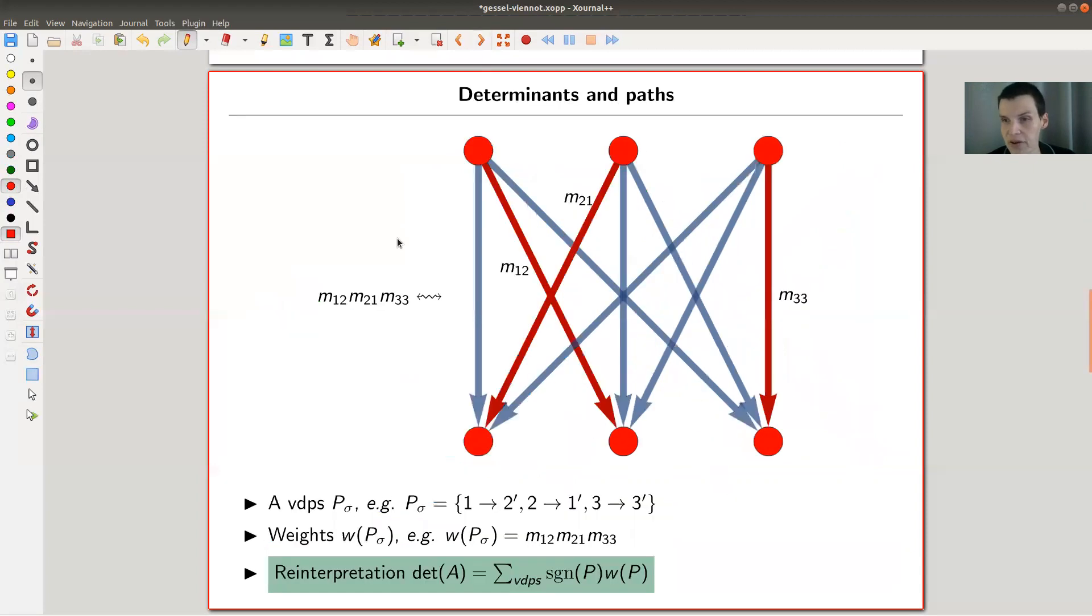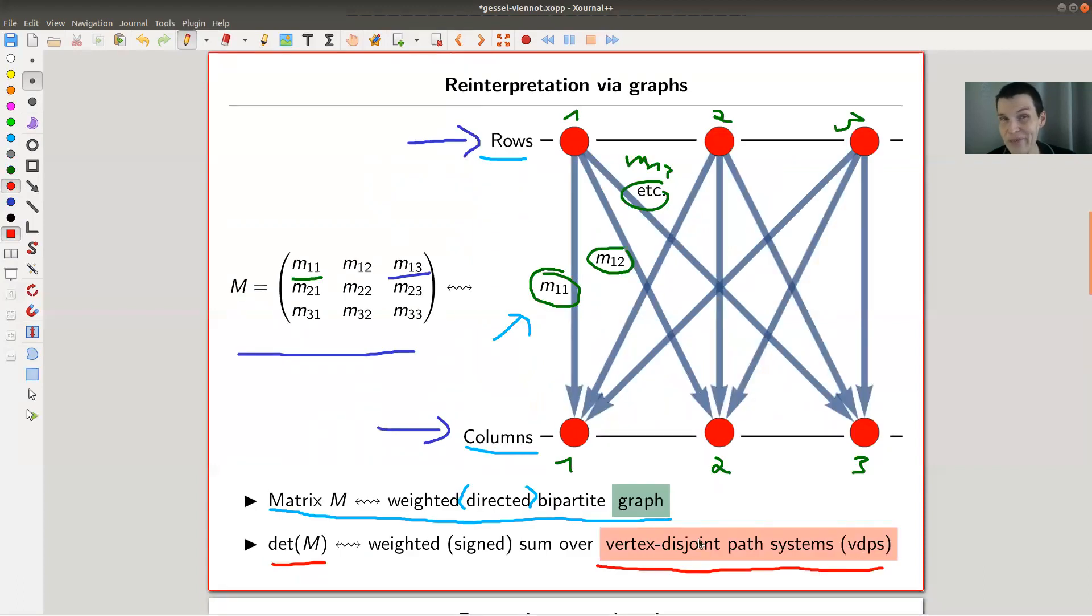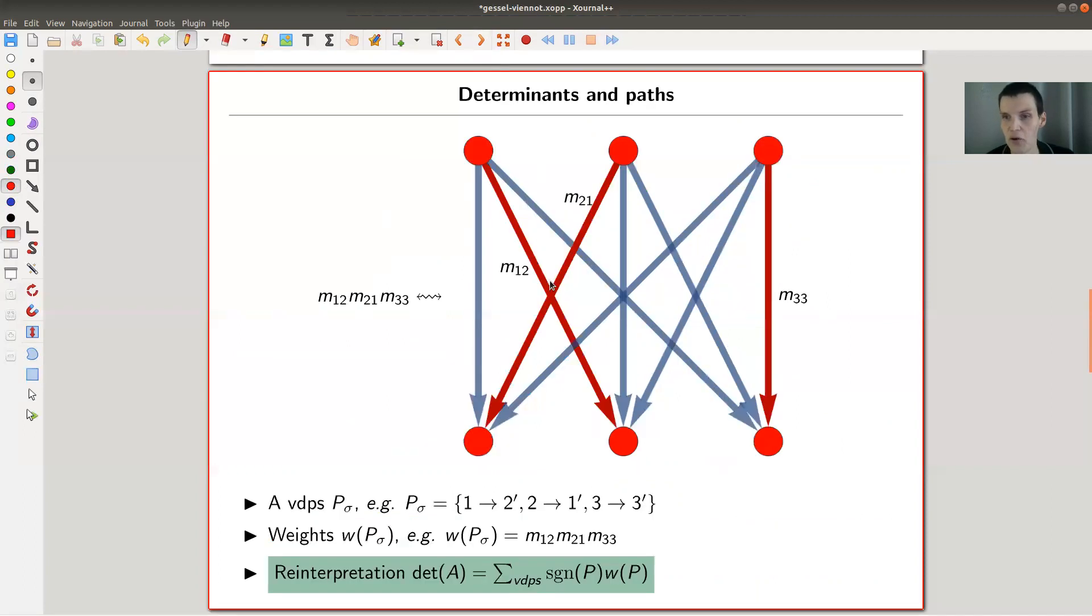So this is a shockingly beautiful and easy idea in some sense. So let's have a look at actually how that works. That was the same setup again. And what you take is you take those VDPS vertex disjoint path systems. So vertex disjoint path system is just a collection of paths, which is both vertex disjoint. So here, I have three of them and you just need to include all vertices. So here I take three paths. This is my M12 entry, this is M21 entry.